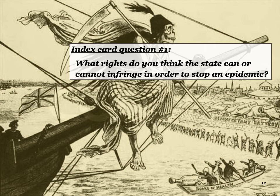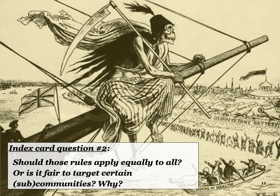Before we wrap up this section, I want you to pause the video and think: what rights do you think the state can or cannot infringe in order to stop an epidemic? Write down some things — on one side, rights the state can remove or infringe upon; on the other, rights that must be respected at all costs, even if it means danger for public health. Then think about whether those rules should apply equally to everyone, or whether some people are more or less deserving of protections.